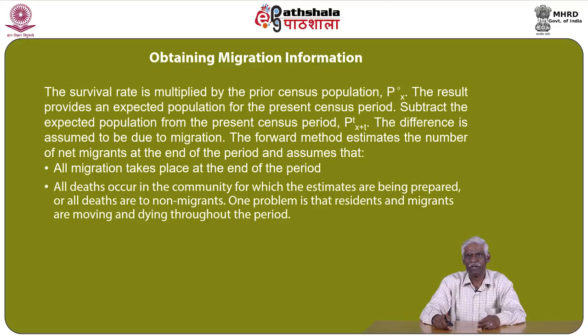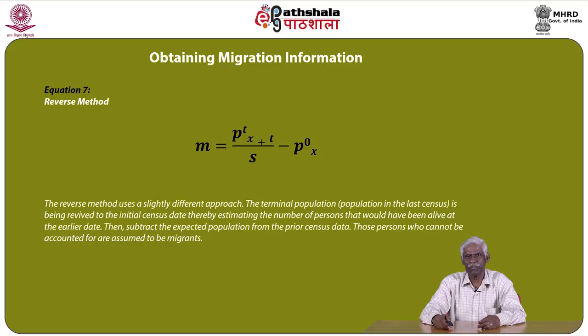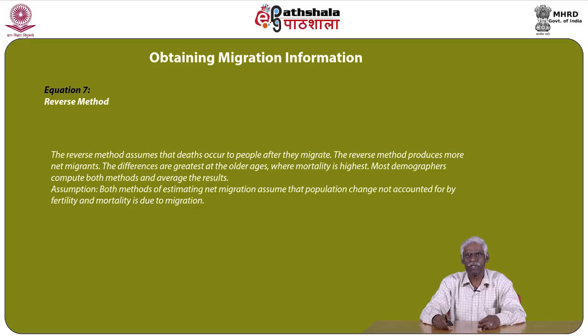One problem is that residents and migrants are moving and dying throughout the period. The reverse method equation is: M = P(t)(x+t) / S − P⁰(x). The reverse method revives the terminal population back to the initial census date, estimating persons alive at the earlier date, then subtracts the expected population from prior census data. Those unaccounted for are assumed to be migrants. The reverse method assumes deaths occur after migration and produces more net migrants. The differences are greatest at older age ranges where mortality is highest. Most demographers compute both methods and average the results.